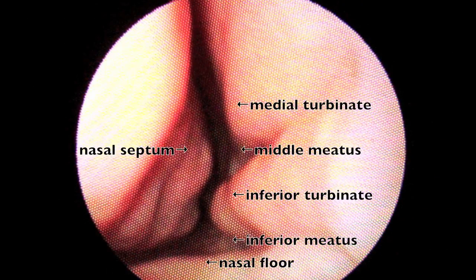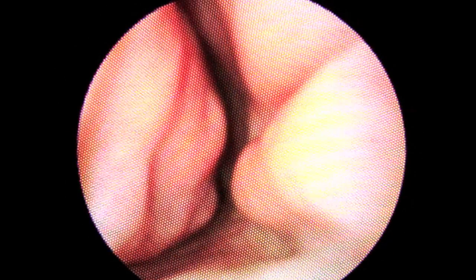I am passing the endoscope through the patient's right naris. On the left, you will notice the nasal septum. On the right, you will observe the turbinates as we progress through the inferior meatus, just above the nasal floor.